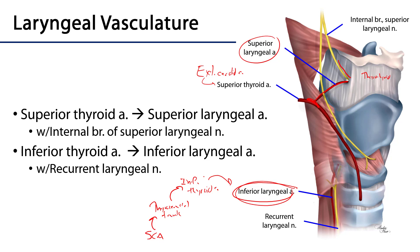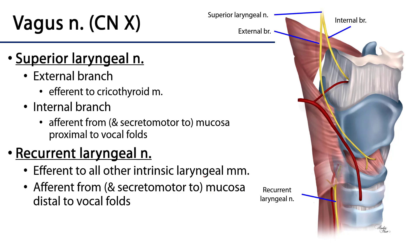It's the inferior thyroid artery that gives rise to the inferior laryngeal artery. So a laryngeal artery is always supplied by its commensurately named thyroid artery — superior thyroid gives rise to the superior laryngeal. In terms of innervation, the larynx is exclusively innervated by the vagus nerve. High in the carotid sheath, the vagus nerve gives off the superior laryngeal nerve.